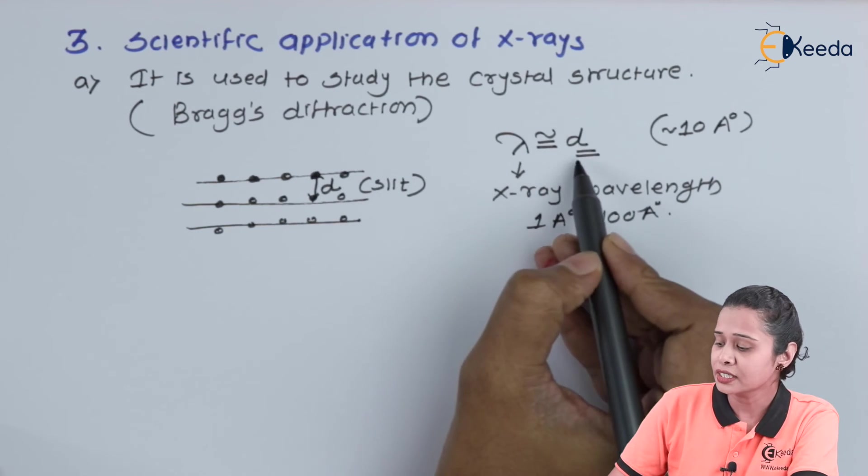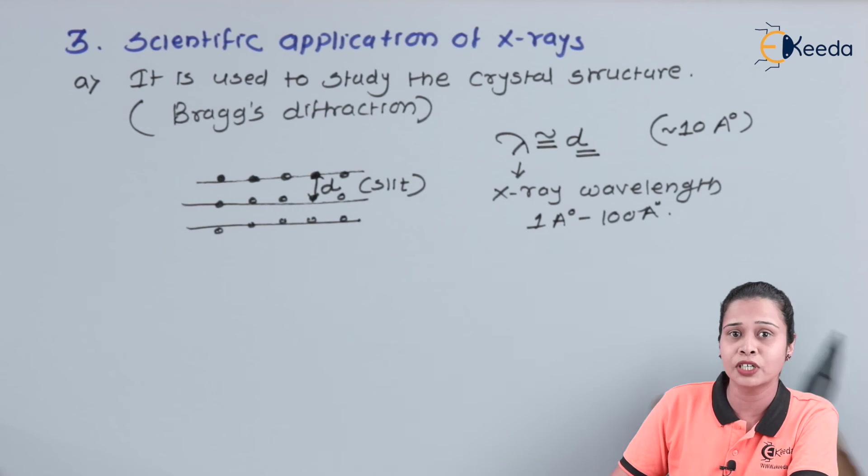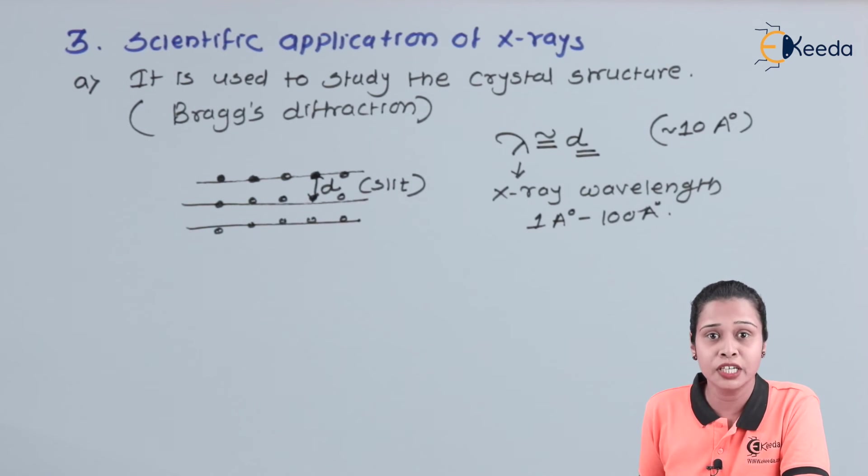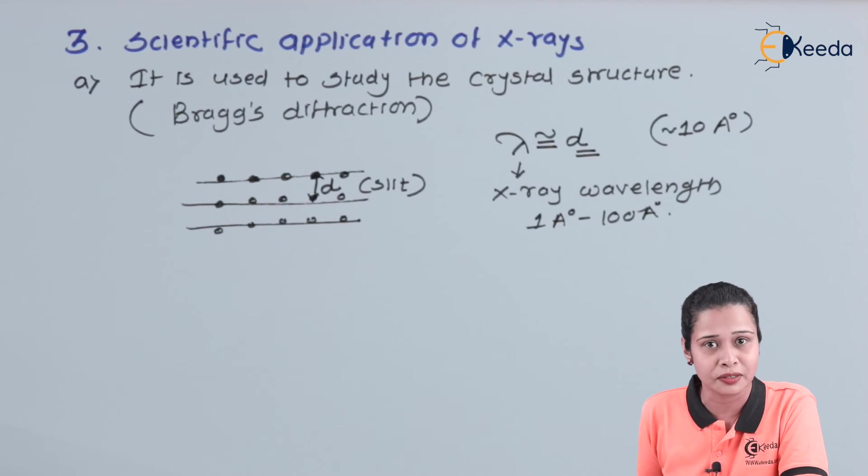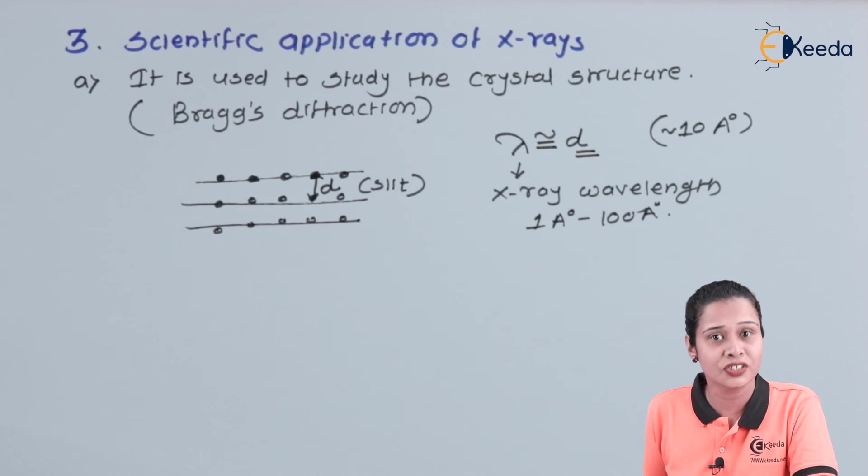It means we can say this interplanar distance of the crystal is approximately equal to the wavelength of X-ray. So only X-rays because of its very short wavelength, it is used to study the crystal structure. Then X-rays are used to analyze the organic structures also.